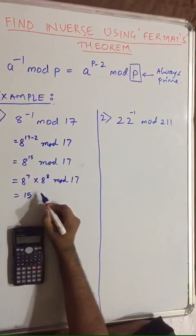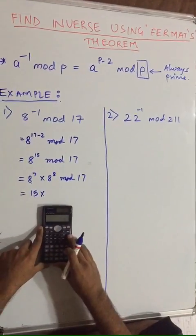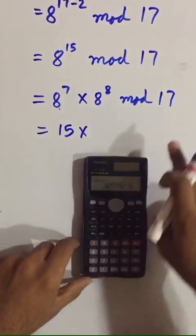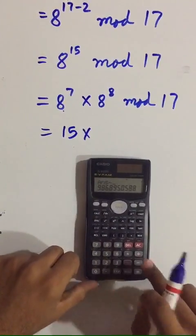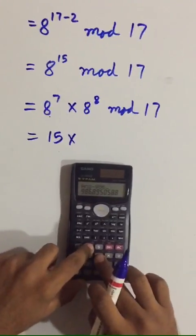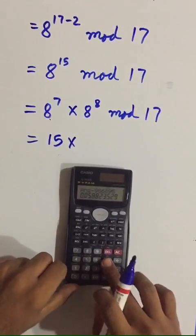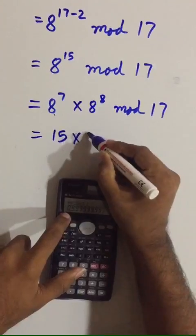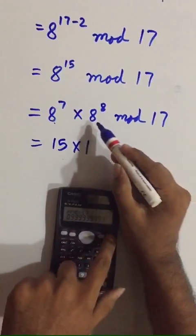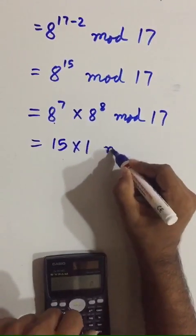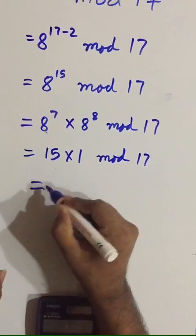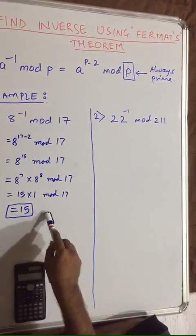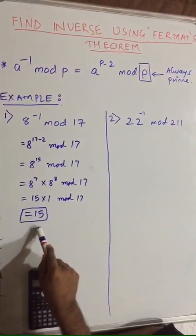Now we have to find 8 raised to 8 mod 17. So again, let us follow the same method using the calculator. So 8 raised to 8 divided by 17 — subtract the numbers before the decimal: 986895 — and multiply with 17. We get our answer as close to 1, so we write it as 1. So 8 raised to 7 is 15, and 8 raised to 8 is 1. So 15 into 1 mod 17, which gives us the answer as 15.